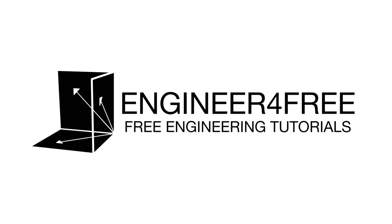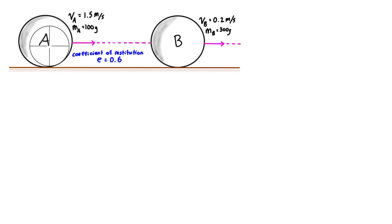All right, welcome back. I have one more problem here for a central impact example. We've got A and B. They're both traveling to the right this time, and the coefficient of restitution is 0.6, so it is not perfectly plastic and it is not perfectly elastic. It's somewhere in the middle.